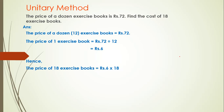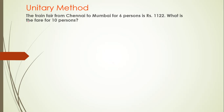Hence the price of 18 exercise books equals rupees 6 into 18. We will do mental calculation: 6 into 8 gives 48, write 8 and carry 4; 6 into 1 is 6, plus 4 carry is 10. So the total is 108. This is the final answer — the price of 18 exercise books equals rupees 108.